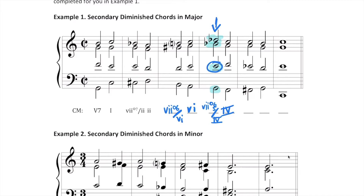Again, the root being E is the secondary leading tone to IV — that's how we know we use the Roman numeral seven. The quality is fully diminished — all minor thirds all the time — that's why we use the little circle. And we're using 65 because the third of the chord is in the bass, and 6-5 is the figured bass for a first inversion seventh chord.